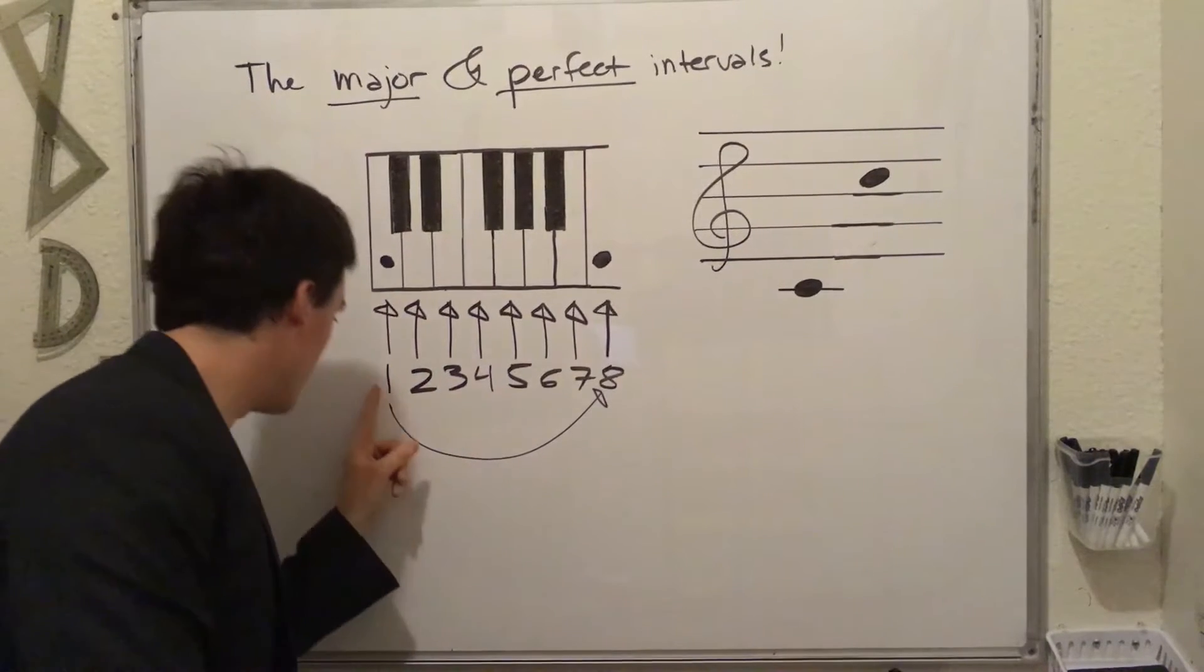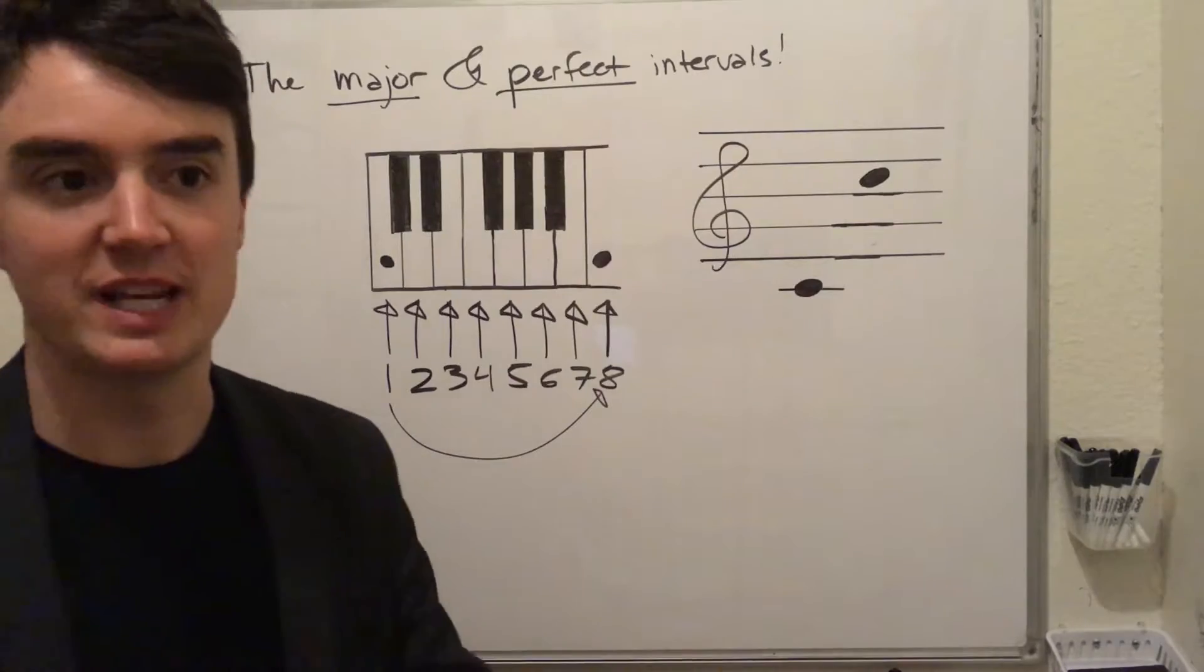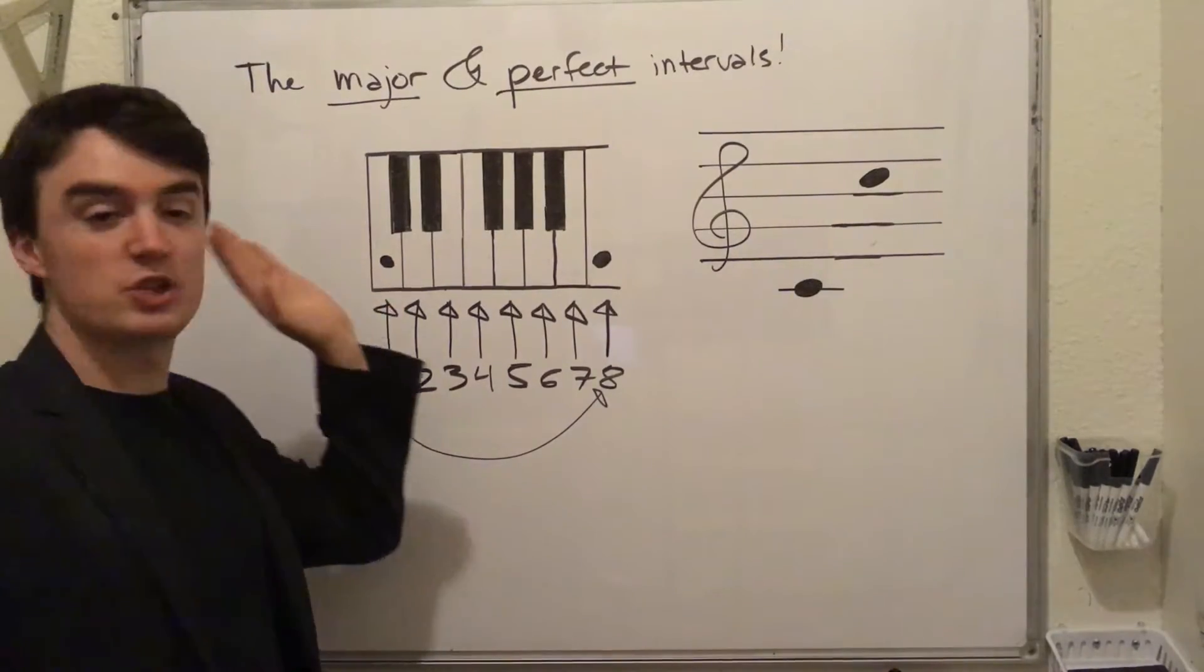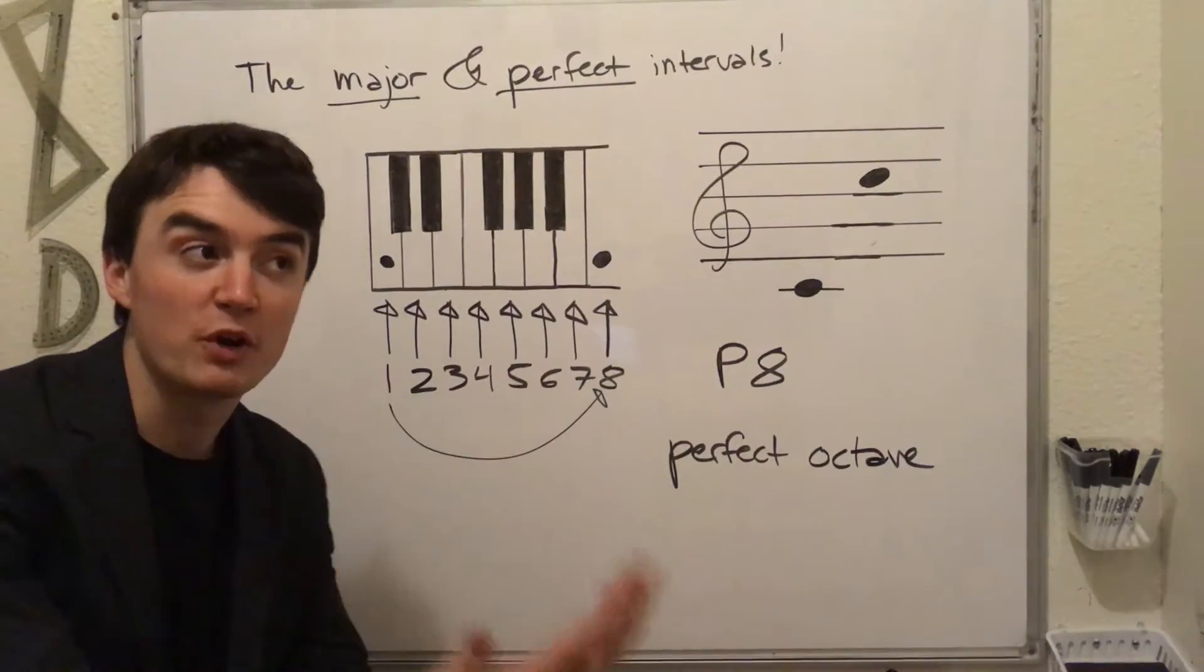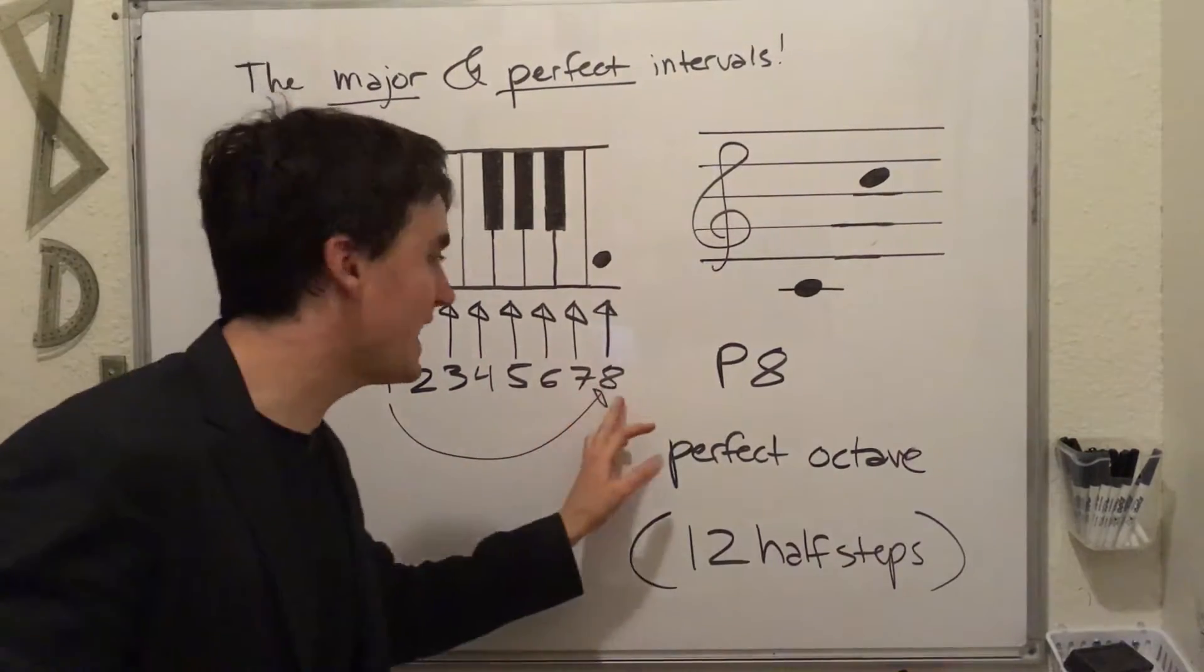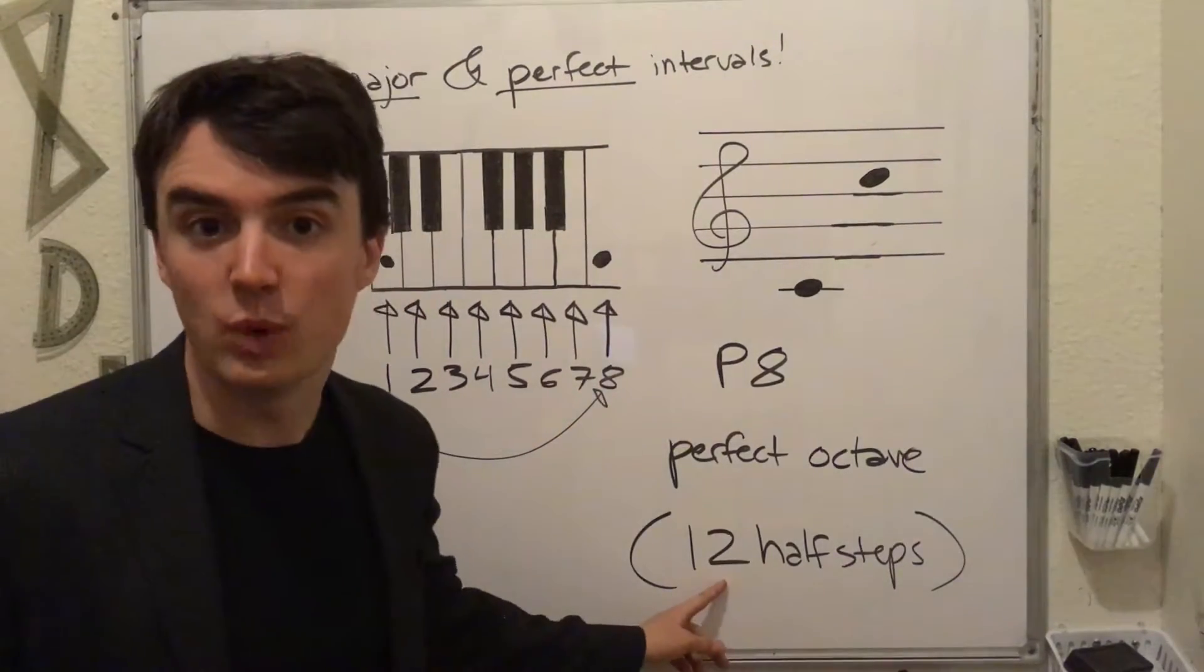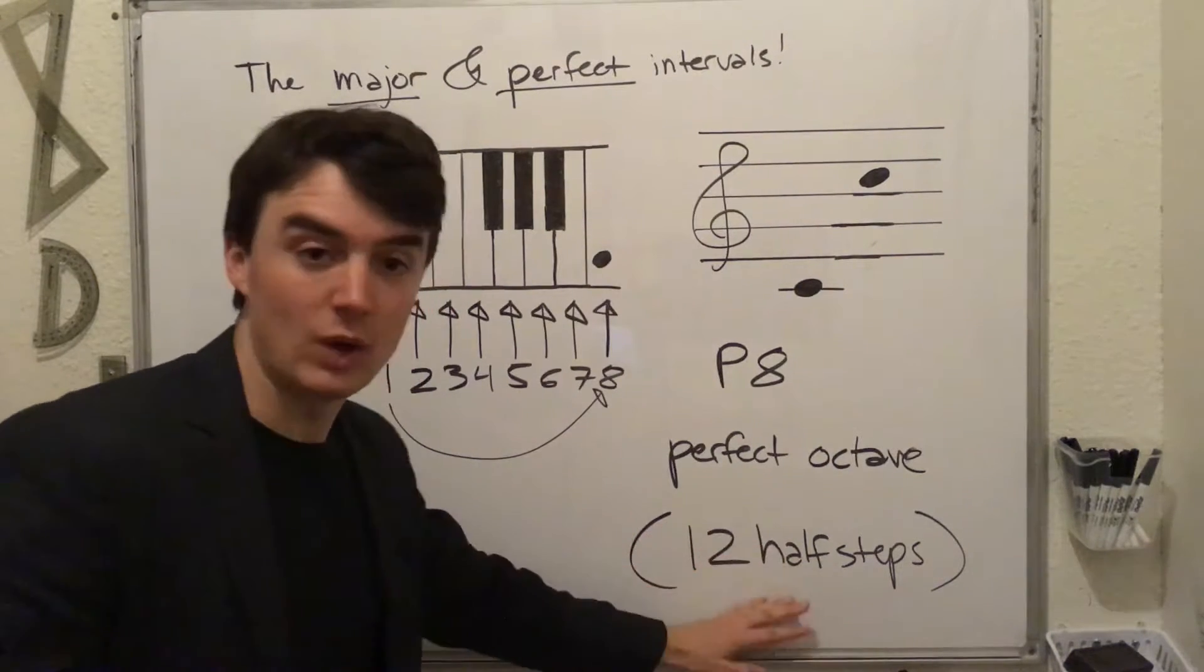If we go from 1 to the last scale degree, 8. So we're going from C to shining C. It's perfect. It's a perfect eighth. Also called a perfect octave. From 7 to 8 is a half step. We can add 1 to our major seventh and get 12 half steps.